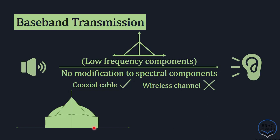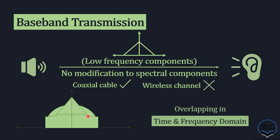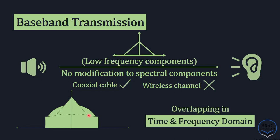So we cannot differentiate these three signals in either time or frequency domain. This is the limitation of baseband transmission. If you do not make any change or modification to the spectral contents, as they are all human speech, they will be overlapping in frequency domain and we cannot differentiate which signal is meant for whom. The signals are overlapping in both time and frequency domain.